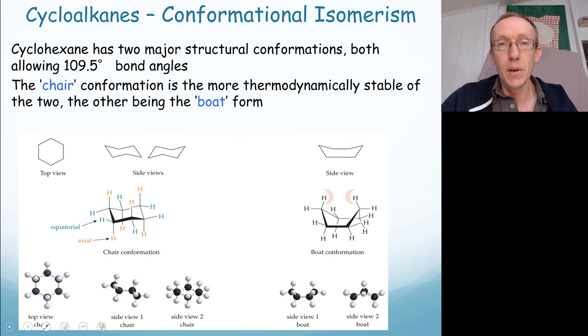Okay, so we said that cyclic systems don't have as much freedom to undergo conformational change as acyclic systems, but they can move. So they can exist in a variety of different conformational isomers.